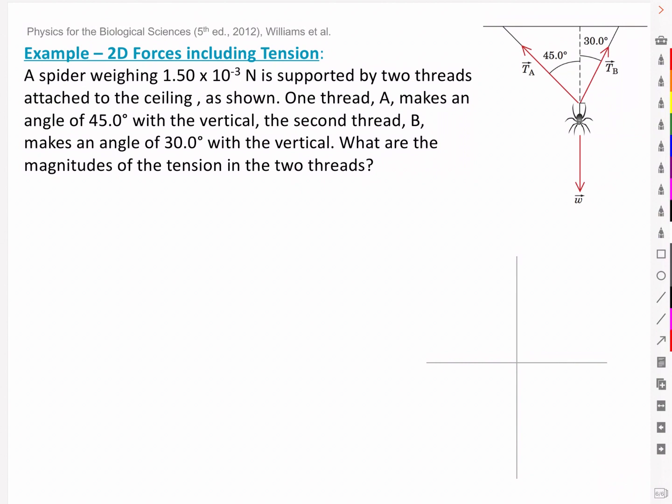One thread A makes an angle of 45 degrees with the vertical, the second thread B makes an angle of 30 degrees with the vertical. What are the magnitudes of the tension in the two threads? Let's start by drawing our free body diagram.